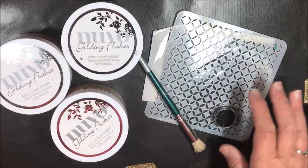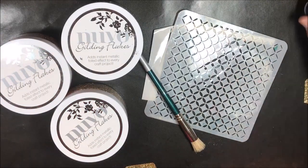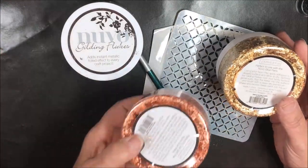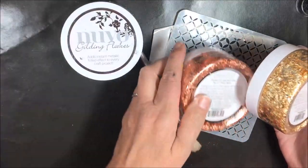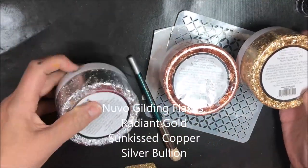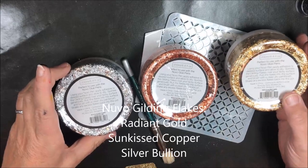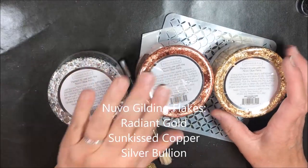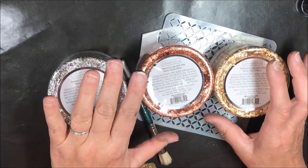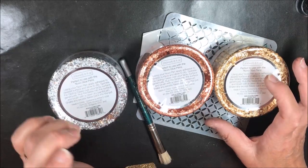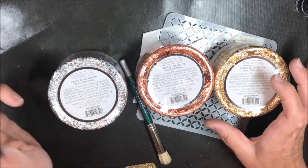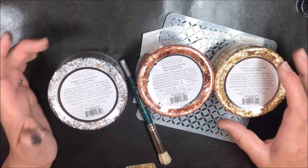We're going to be starting with a couple of things. We're using Nuvo gilding flakes in radiant gold, sun-kissed copper, and silver bouillon. We're going to be using all three colors on our background but really highlighting the copper and the gold because of what I'll be doing with the actual finished piece.